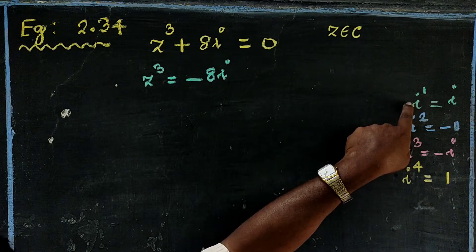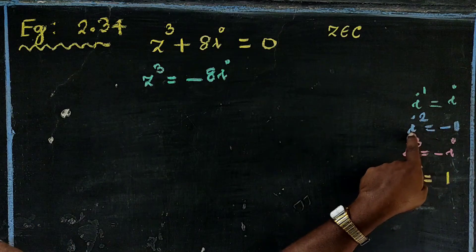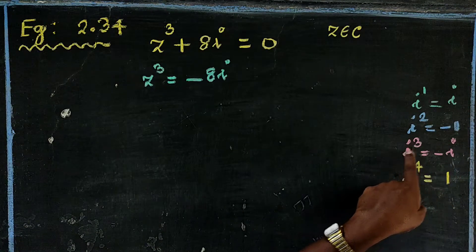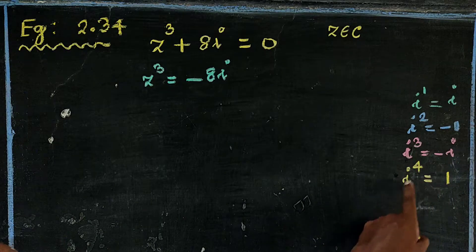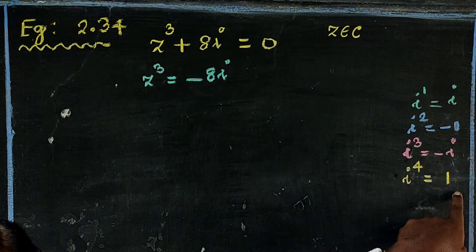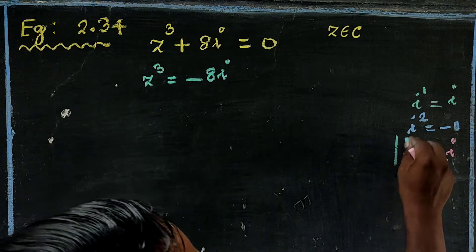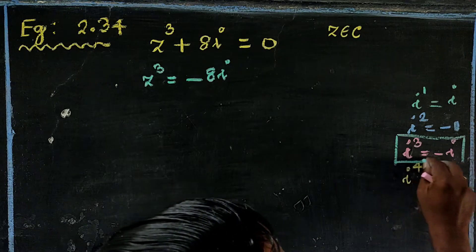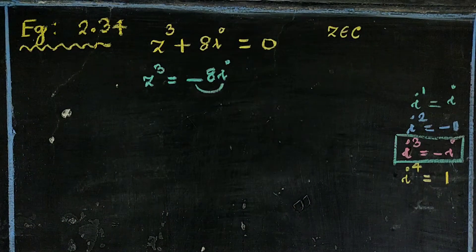We know: i power 1 is equal to i, i square is equal to minus 1, i cube is equal to minus i, i power 4 is equal to 1. So Z cube plus 8i is equal to minus i.